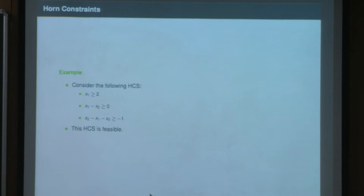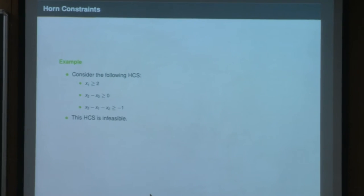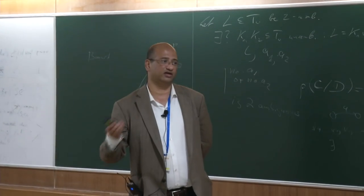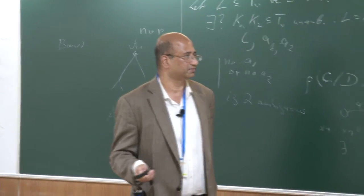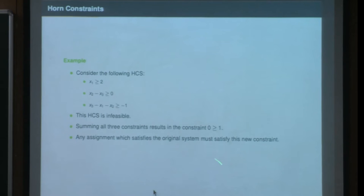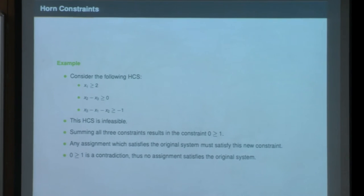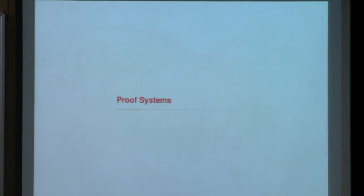A key property proved by Voda in the early 1980s: a horn constraint system has an integer solution if and only if it has a fractional solution—a property it shares with difference constraints, unlike UTVPI. For example, a feasible system has values satisfying all constraints. For an infeasible system, the proof of infeasibility is the goal: adding all constraints together yields 0 ≥ 1, which no assignment can satisfy, proving the system is unsatisfiable.